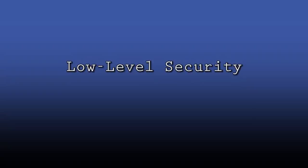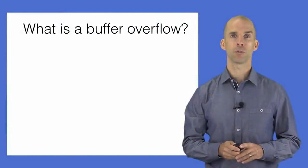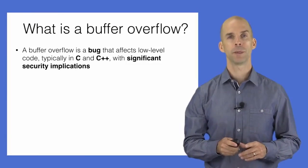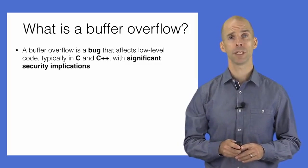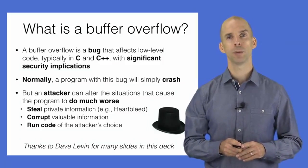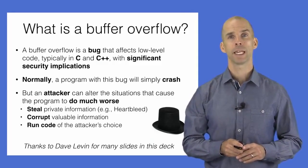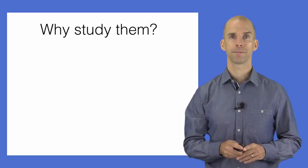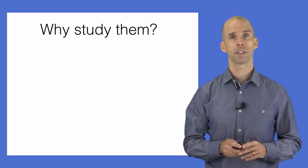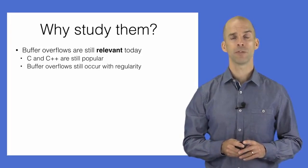This unit considers low-level software security, a concern for systems written in C and C++. The focus is on the infamous buffer overflow attack. A buffer overflow is a bug that affects low-level code — typically written in C and C++ — with significant security implications, allowing an attacker to steal private information, corrupt important data, and even run code of his choice. Buffer overflows are worth studying because C and C++ are still used to write a lot of software, and that software often has buffer overflow vulnerabilities.